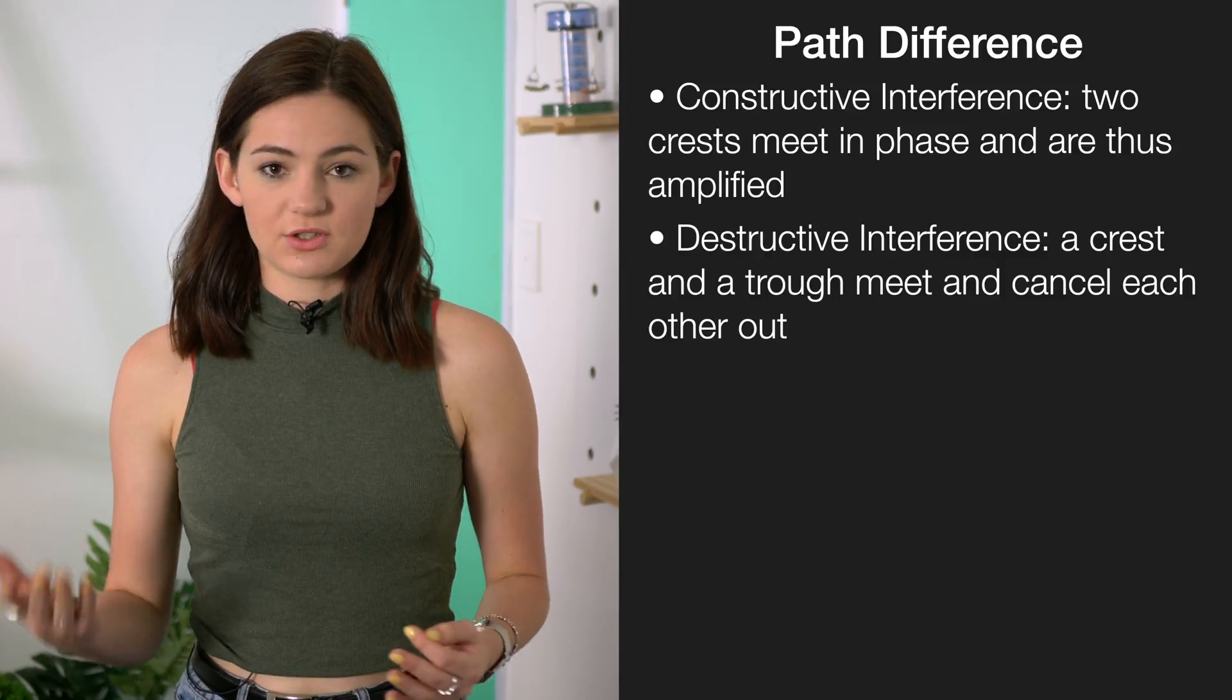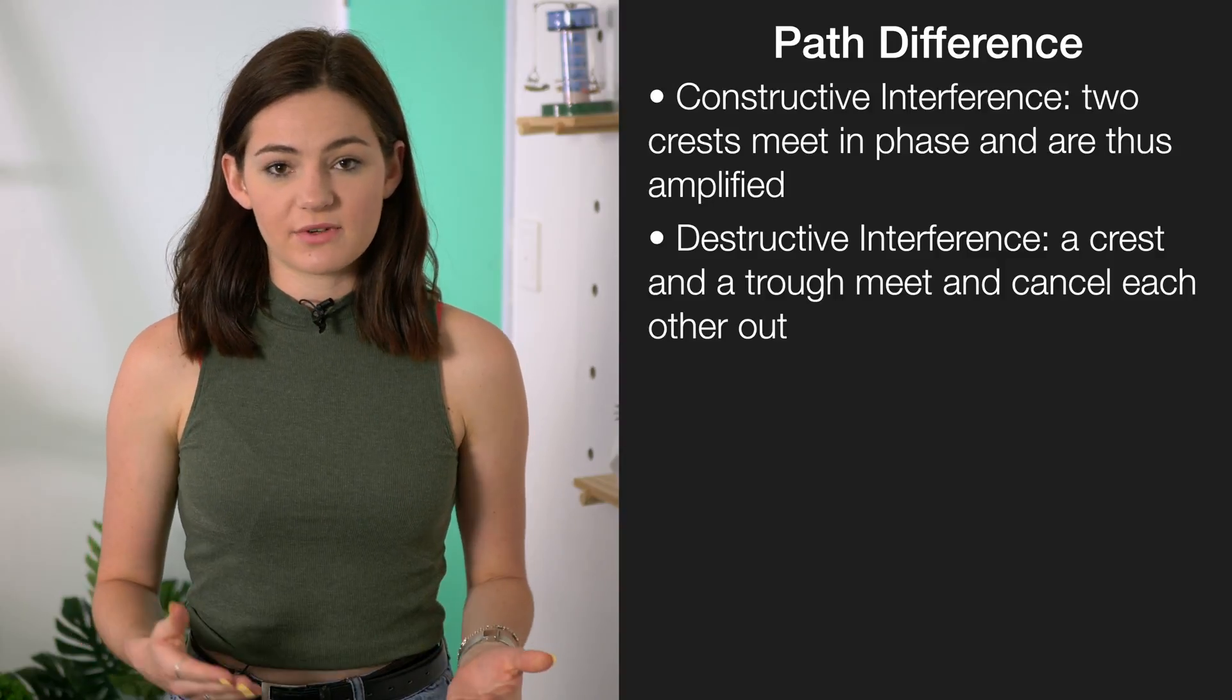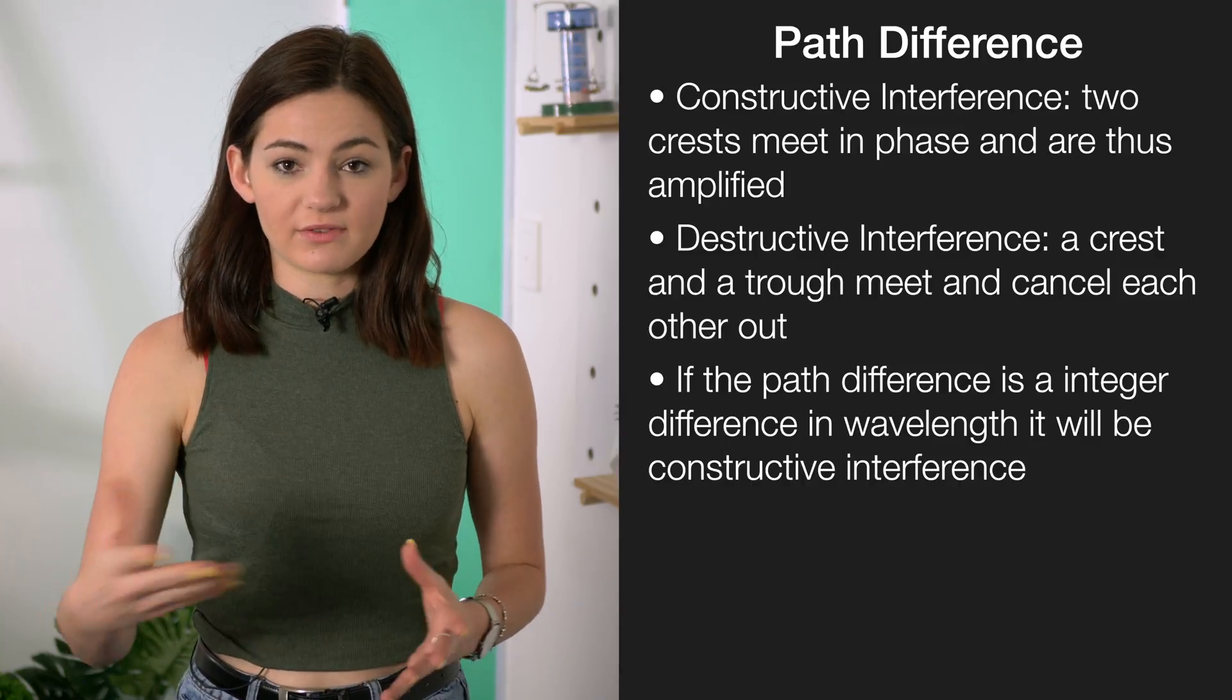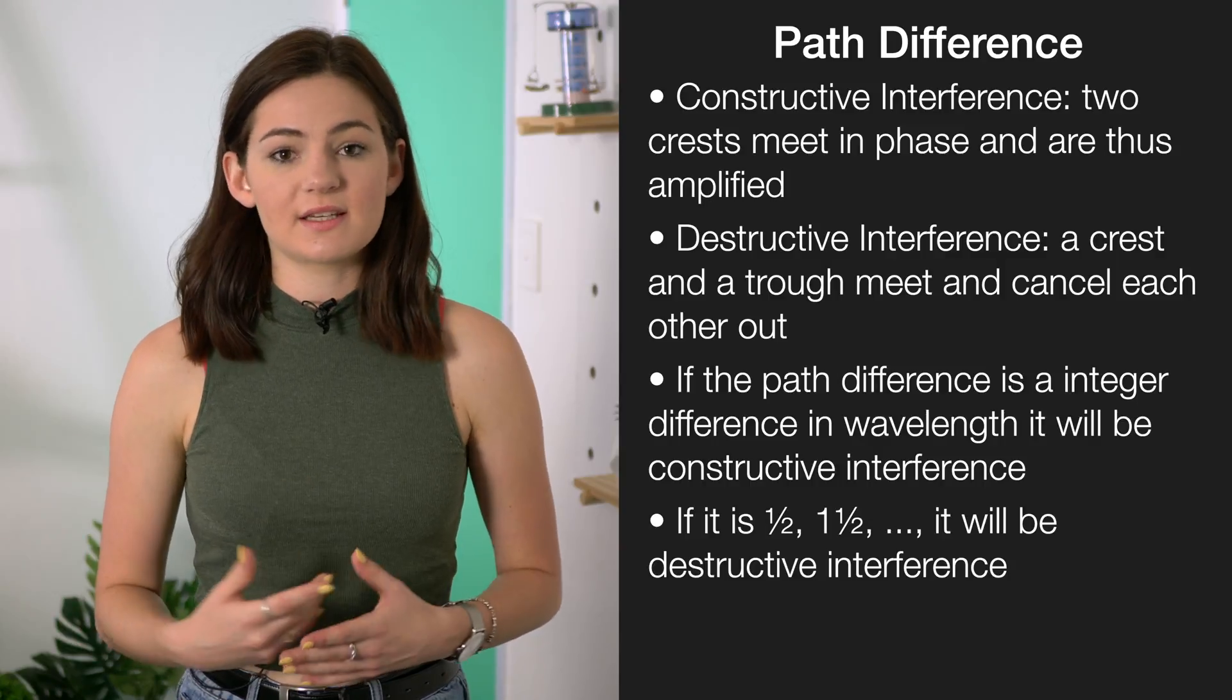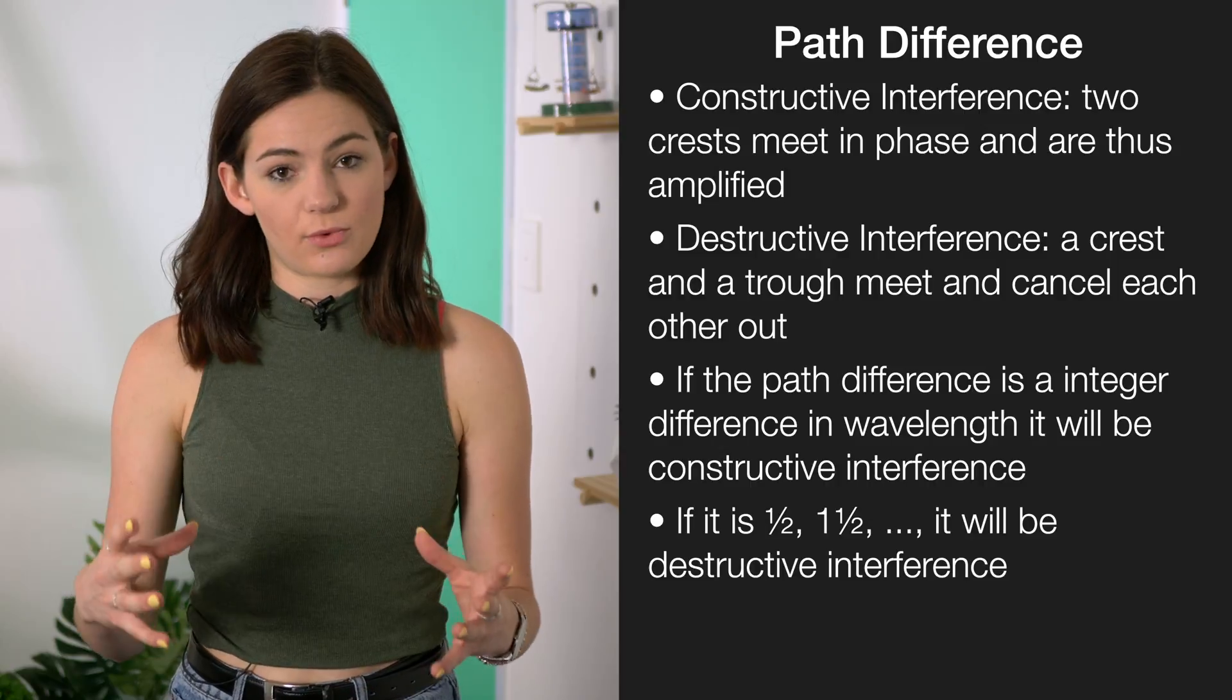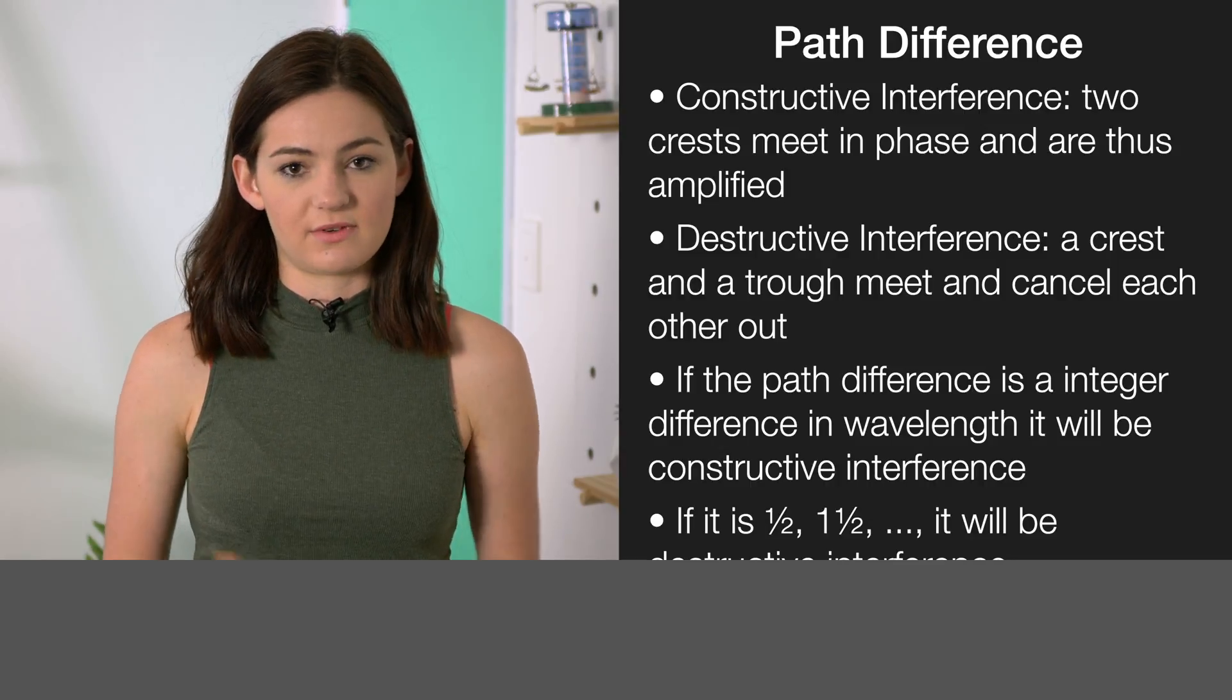To determine whether it's constructive or destructive interference, you need to look at path difference. If the path difference is one, two, or any integer multiple of wavelengths, it's constructive interference. If it's half a wavelength, one and a half, or so on, it's destructive interference. Check your formula sheet for the formulas to help determine which type of interference you have.